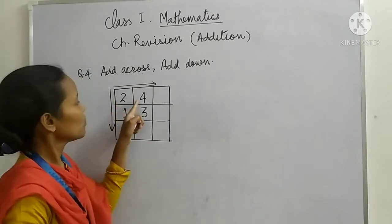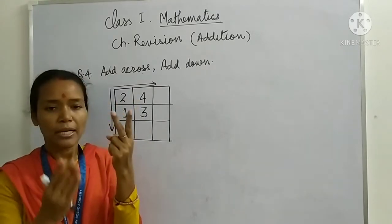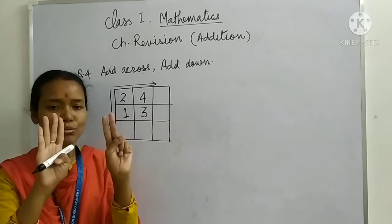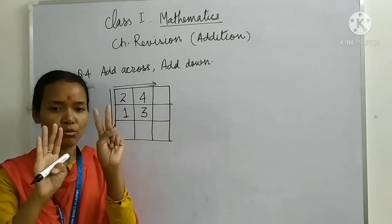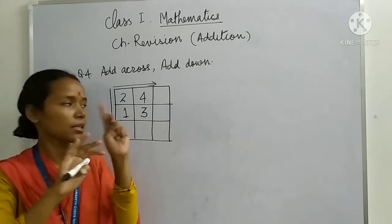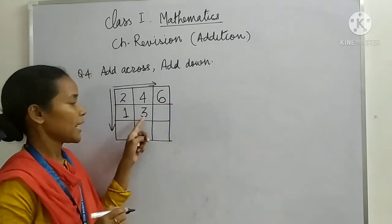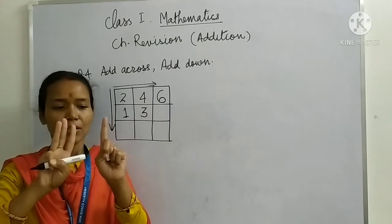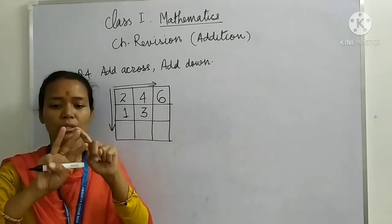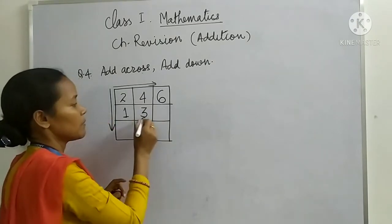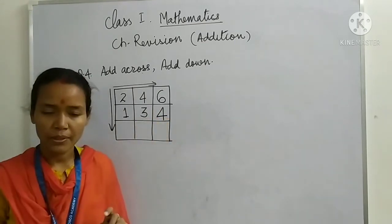So first, 2 plus 4. 2 and 4, counting 1, 2, 3, 4, 5, 6. 2 plus 4 is 6. 1 and 3, counting 1, 2, 3, 4. 1 plus 3 is 4.